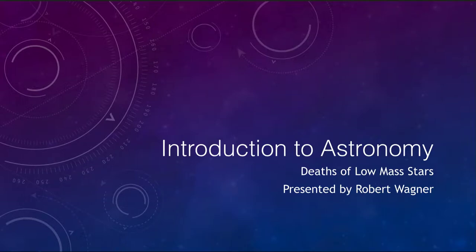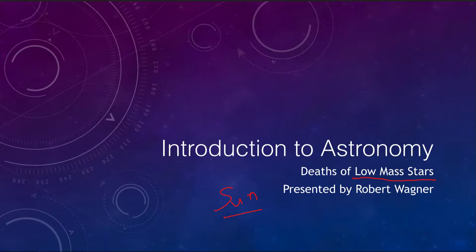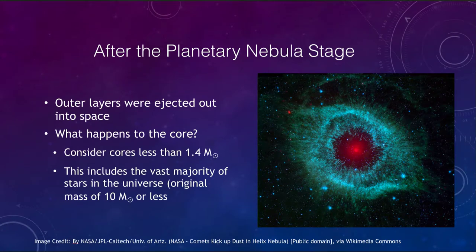Greetings and welcome to the introduction to astronomy. In this video we are going to talk about the deaths of low mass stars — by low mass we mean stars similar to our Sun. We will look at what the deaths of those stars are like. We started looking at this previously; one of the stages we see is the planetary nebula phase, where the outer layers are ejected out into space. What we really want to look at now is what happens to the core.